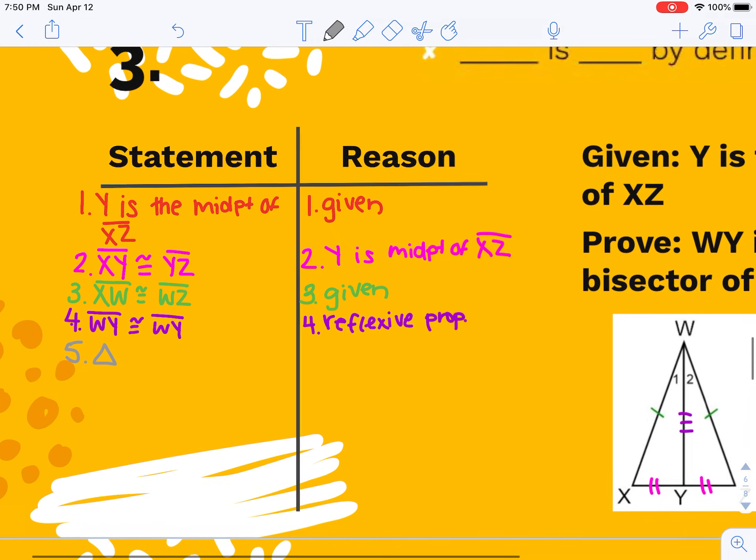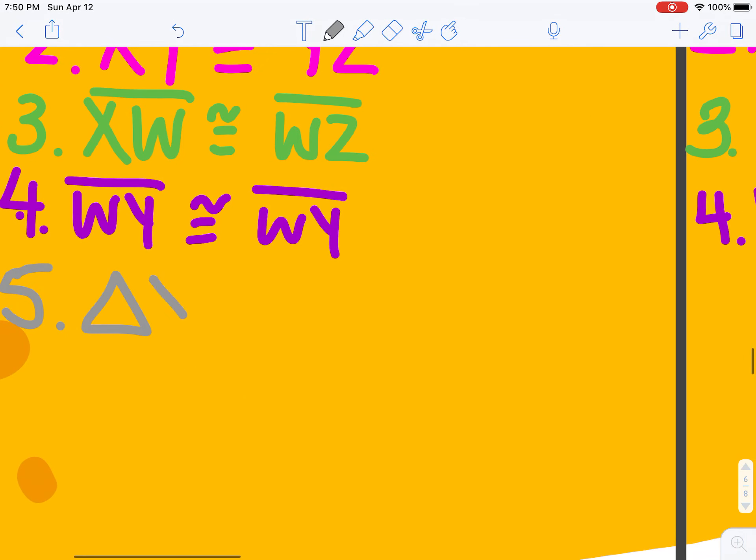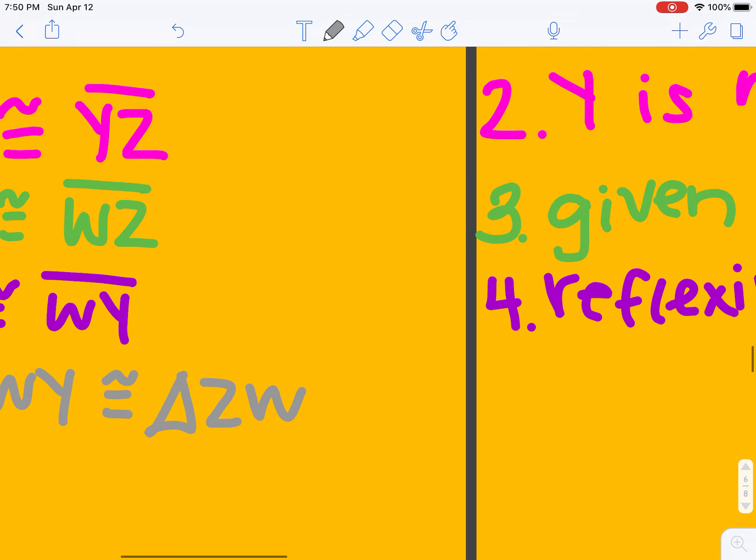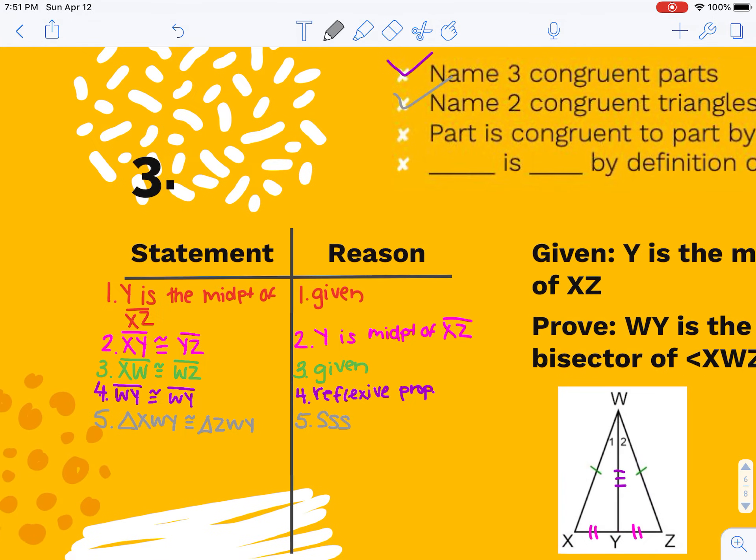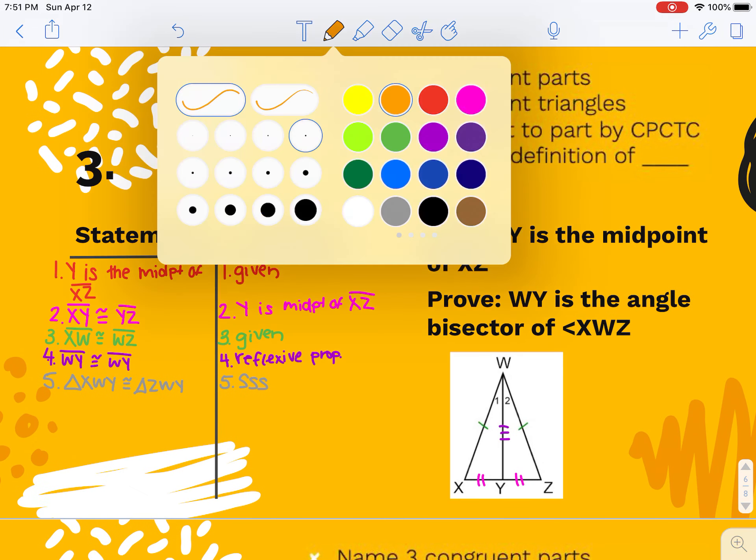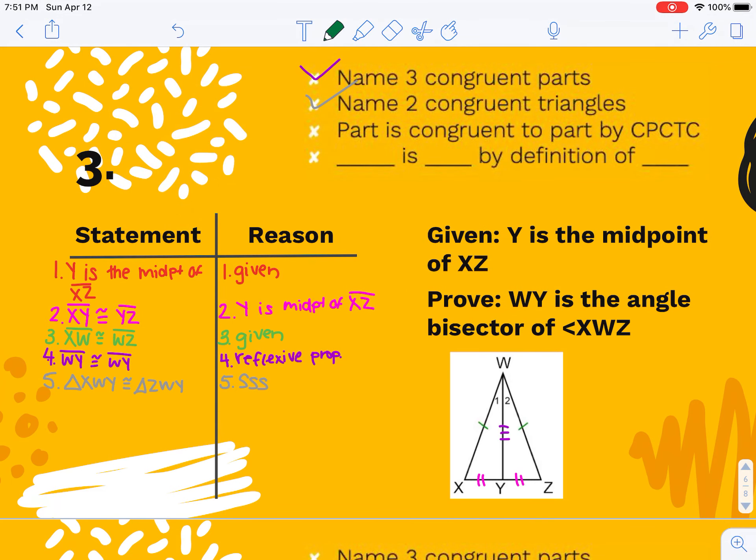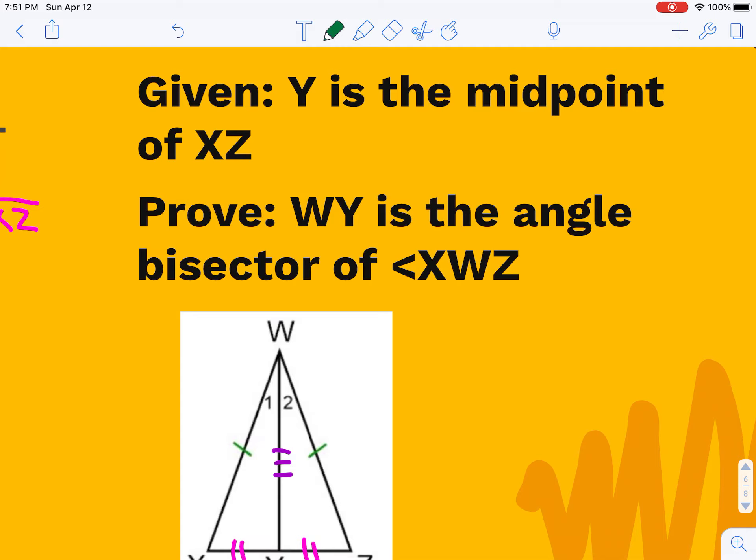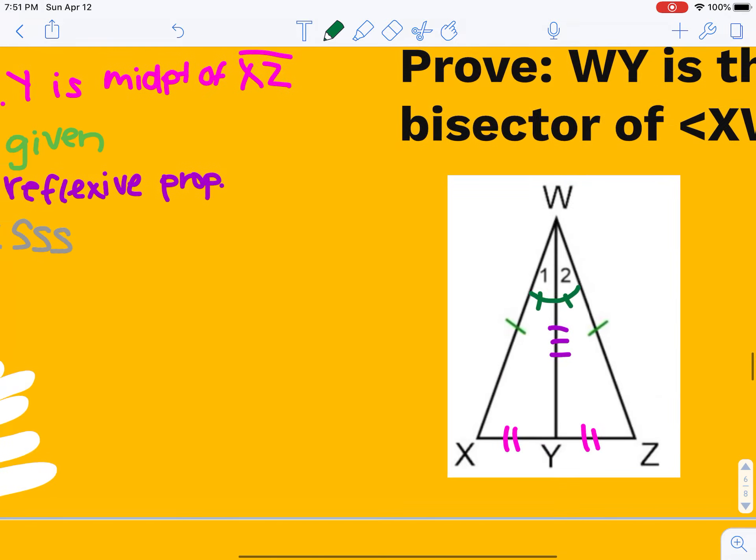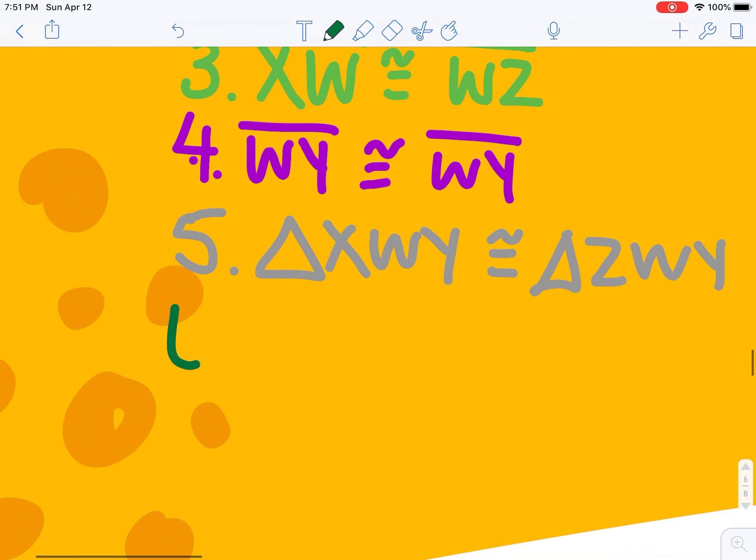I'll say triangle XWY is congruent to triangle ZWY. I used all three sides, so my shortcut is side, side, side. My next step is to say this part is congruent to that part, and my reason will be CPCTC. If I'm trying to prove WY is the angle bisector, if that's true, angle one has to be congruent to angle two. So that's the parts I'm going to prove congruent using CPCTC.